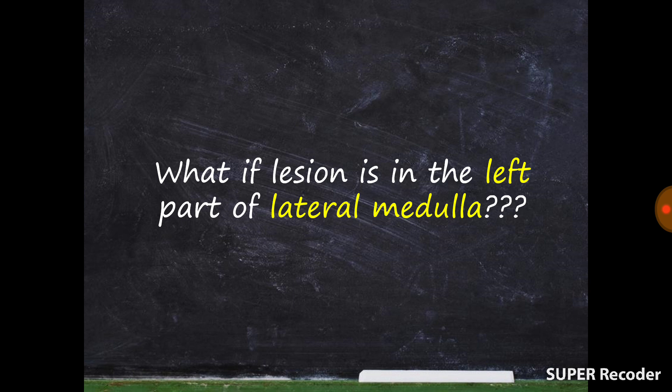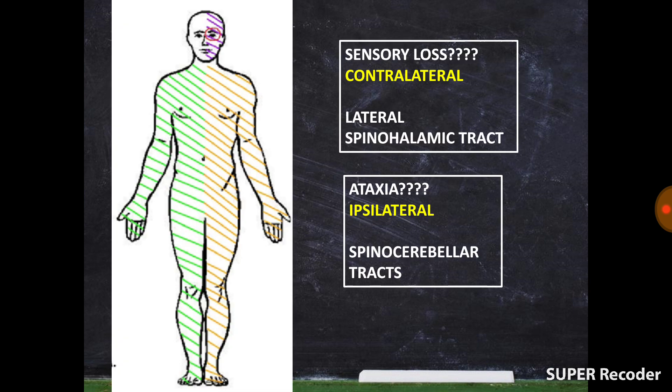Let's take an example of a lesion on the left side of the lateral medulla. We'll divide the presentation into sensory loss, motor loss, and cranial nerve involvement. The sensory loss is due to involvement of the lateral spinothalamic tract. Recall from neuroanatomy that spinothalamic tract fibers ascend one or two segments and then decussate in the spinal cord itself. So at the level of the medulla, they have already crossed. Therefore, a lesion on the left side means pain and temperature sensations are lost on the contralateral side.